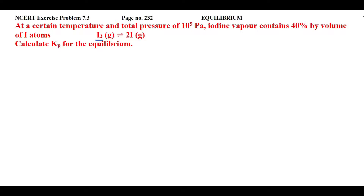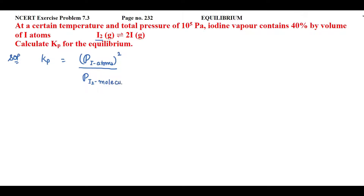This reaction is in the gaseous phase, so for gases we always consider partial pressure. The relation of Kp, the equilibrium constant, will be the partial pressure of the product — iodine atoms on the product side — raised to the power of the stoichiometry coefficient, divided by the partial pressure of the reactant, which is I₂ molecule on the reactant side. So the first target is to find the partial pressures.